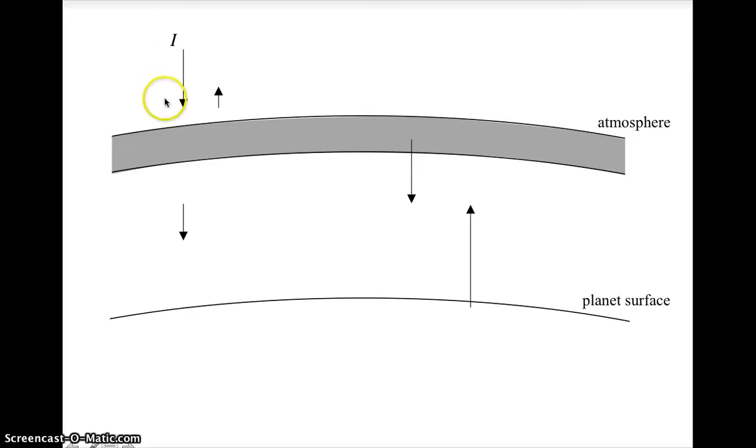Now, we could call this intensity that's incident on the atmosphere I. This value that's reflected is just the albedo times the incident intensity. So if we take the albedo and multiply it, we'll get the fraction of intensity which is reflected off. How much intensity is transmitted? Well, you take the total and subtract the reflected to get how much is transmitted.